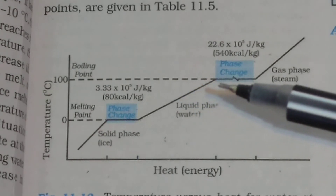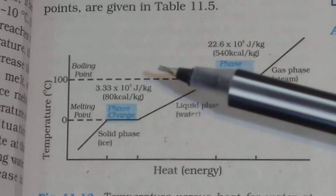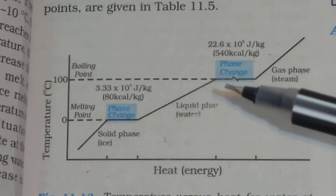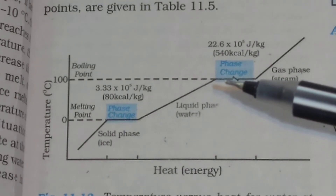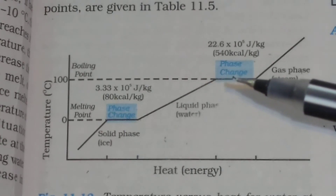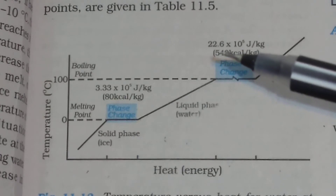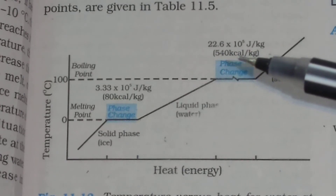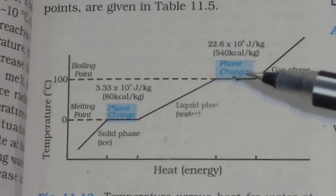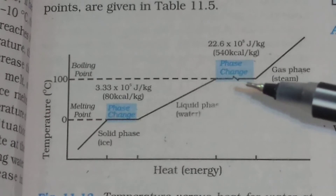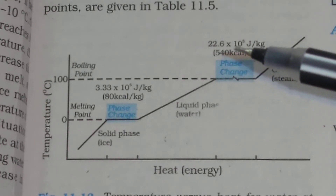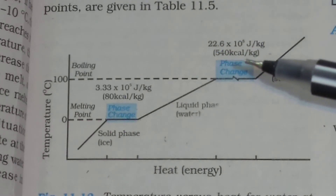Similarly, when water changes from liquid state to gaseous state, there is no change in temperature. The boiling point is 100 degrees centigrade at 1 atmospheric pressure. During this phase change, there is no change of temperature, but heat is required — 22.6 × 10⁵ joule per kg, or 540 kilocalorie per kg, or 540 calorie per gram. This is the latent heat of vaporization for steam.